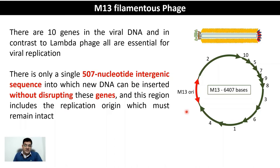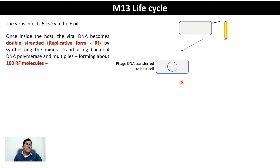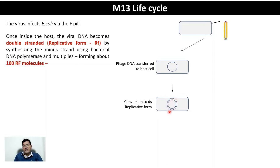In the first step, the viral DNA is transferred into the host cell via the F pili — this is the infection stage. Once the single-stranded circular viral DNA is inside the host cell, it first converts into a double-stranded form known as the replicative form. Using bacterial DNA polymerase to synthesize the minus strand, it then replicates and forms around 100 copies of its DNA — approximately 100 replicative form molecules.